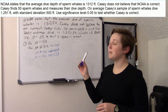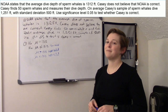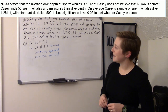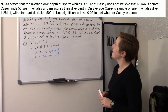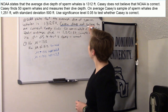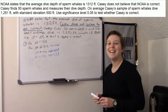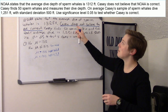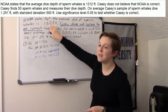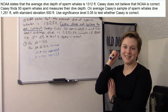In this problem, the phrasing 'Casey does not believe they are correct' is pretty straightforward — it means Casey believes the true mean is something different than 1,312. It could be either greater than or less than. Casey believes it's different than 1,312, which means we use a two-tailed, non-directional test.